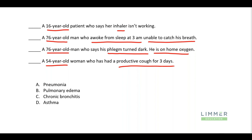No one thing should lead us to choose — we should find the way things all fit together. Somebody who's 16: I wouldn't expect pulmonary edema, and I wouldn't expect chronic bronchitis. If somebody says her inhaler isn't working, being a young patient with an inhaler, that leads me to think asthma. Generally, with any question, there's something you rule in or rule out pretty quickly, but always read all the choices.